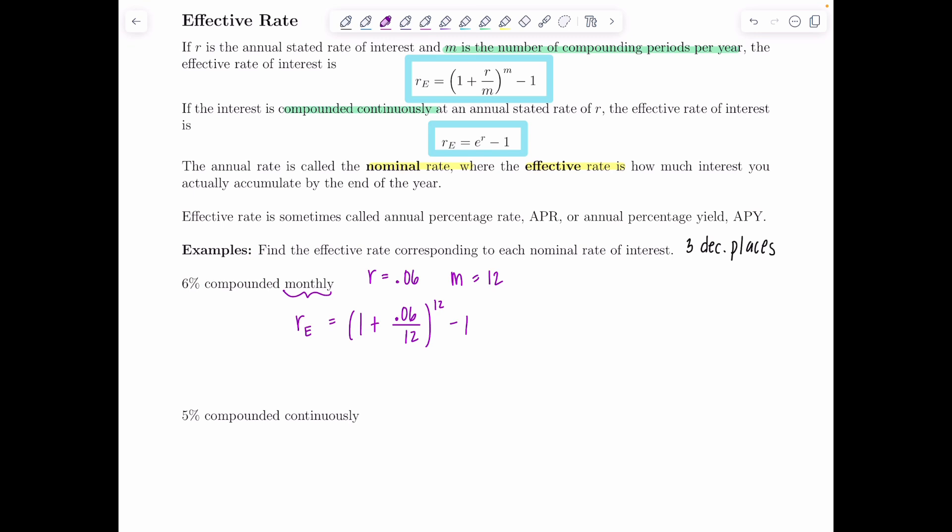So one plus 0.06 divided by 12 ends up being 1.005. Then we need to raise that to the 12th and then subtract one and you get about 0.0616778. So I'll just say 0.8 because we're rounding to two decimal places. So I got to move this over twice and this is 6.168 percent. So 6 percent compounded monthly comes out to 6.168 percent.